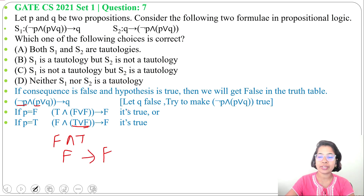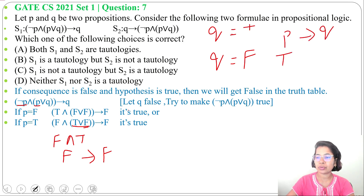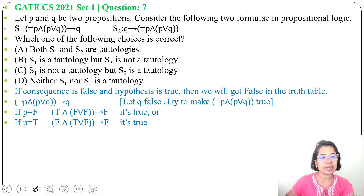We considered Q as false. When Q is true there is no chance of the implication being false. In case of implication, it is false only when the antecedent is true and consequent is false. So we found S1 is a tautology.